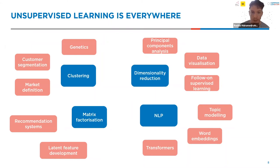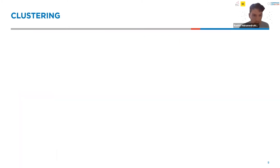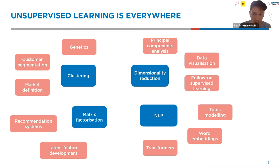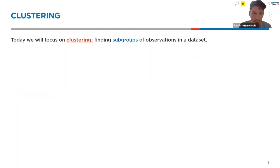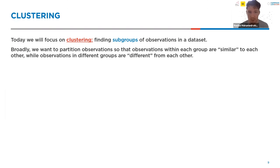There are loads of applications for unsupervised learning, and it's actually a little more varied than supervised learning, where tasks tend to be more precisely defined. So today we're specifically going to be talking about clustering. Clustering is pretty self-explanatory — we have a bunch of data and we want to find some subgroups of observations in that dataset. We want to do that in such a way that observations that are similar are in the same cluster, and those that are far apart are in different clusters.